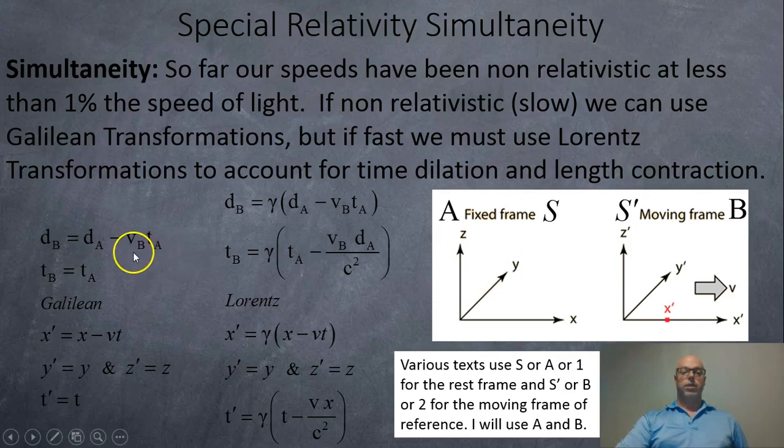In a Galilean system, to find your position, according to person B, it's just A subtract the relative velocity times the time. And they share the same amount of time. And if you want to rewrite it using x and y instead, x is equal to x subtract your speed times the time. And we're only moving in the x direction. So your y and y prime are the same, z and z prime are the same, and t and t prime are the same.